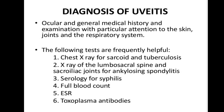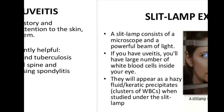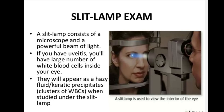Diagnosis involves history and physical examination. Where infectious disease or other systemic diseases are suspected, relevant diagnostic tests are needed, such as tests to rule out tuberculosis, VDRL (Venereal Disease Research Laboratory), chest X-ray for sarcoid and tuberculosis, X-ray of the lumbosacral spine, serology for syphilis, full blood count, ESR, toxoplasma antibodies, and culture and sensitivity. Slit-lamp examination may reveal nodules in the iris and a large number of white blood cells.